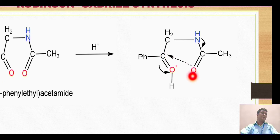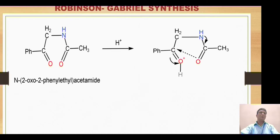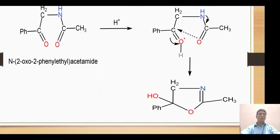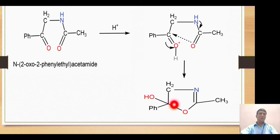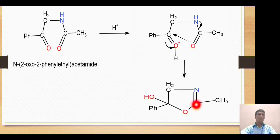The electronegative oxygen attacks the carbocation to fulfill the electron deficiency. In doing so, this oxygen breaks one of its pi bonds and forms a bond with that carbon, generating a five-membered heterocyclic nucleus. When oxygen forms this bond with the carbon, that carbon becomes electron-deficient, so the nitrogen liberates its proton. The electrons from the nitrogen-hydrogen bond are utilized to make a double bond between nitrogen and carbon.